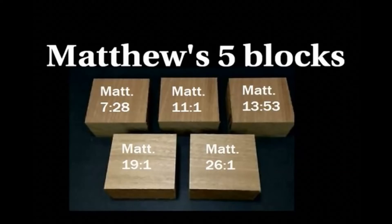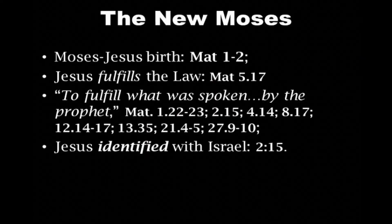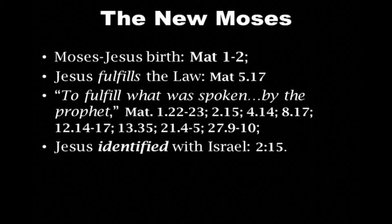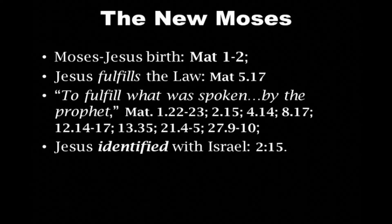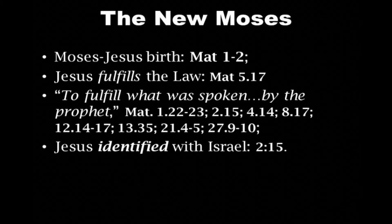The Gospel of Matthew opens with the contrast of Moses and Jesus' birth. Jesus goes into exile — goes to Egypt — to escape the persecution of Herod the king, so we already have comparisons there in the first two chapters. Jesus' teaching is the fulfillment of Torah; Matthew 5:17 is the go-to reference, where Jesus said he did not come to abolish the law but to fulfill it.